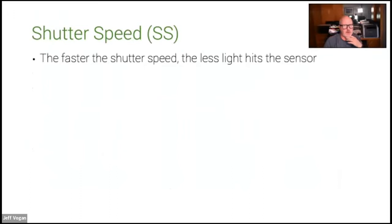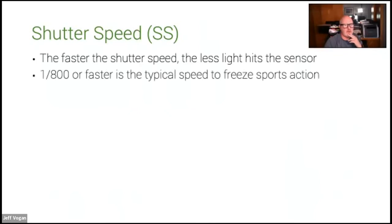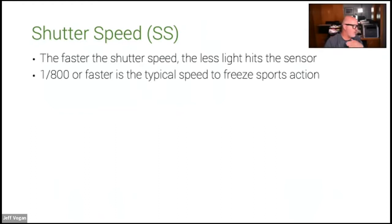Shutter speed: the faster the shutter, the less light hits the sensor — simple physics. If the shutter is open for a second, you get a second's worth of light. So to get proper exposure it's a balance of shutter speed, aperture, and ISO. 1/800 of a second or faster is typical to freeze most sport action. I normally shoot at 1/1250 of a second or faster depending on the sport, and 800 is about as slow as you want to go unless you're trying to introduce motion blur.